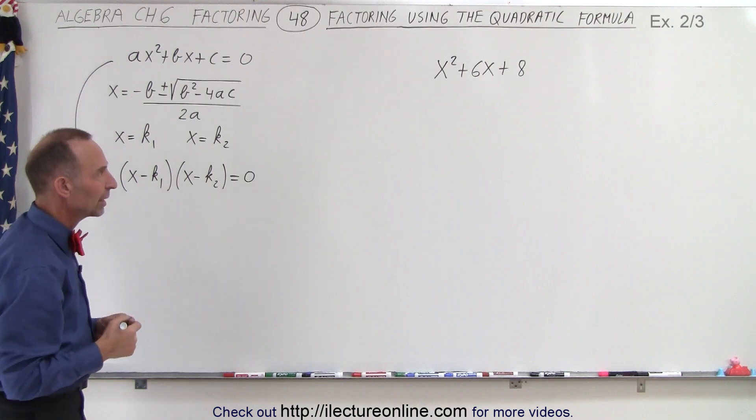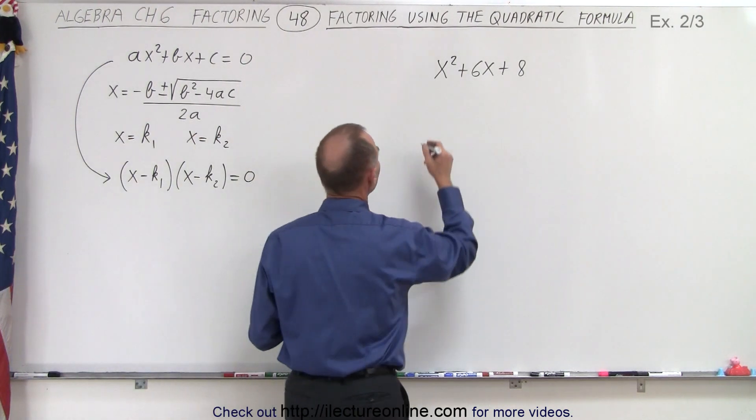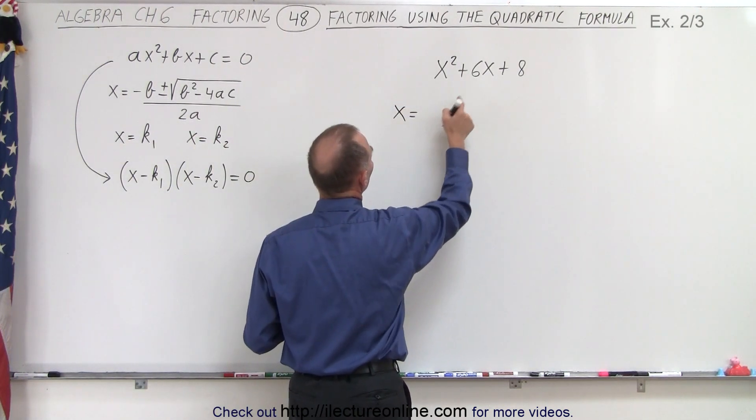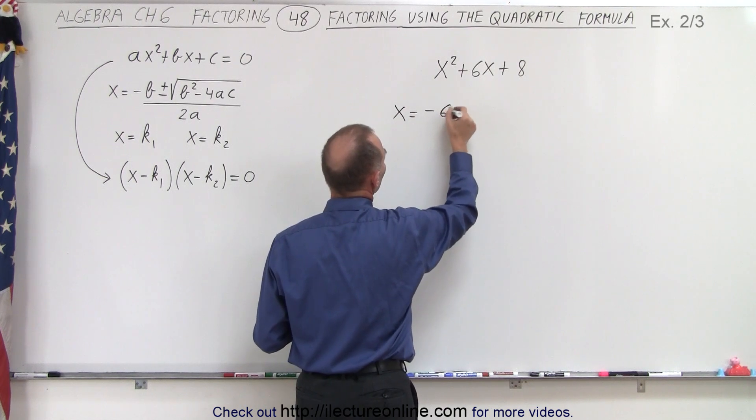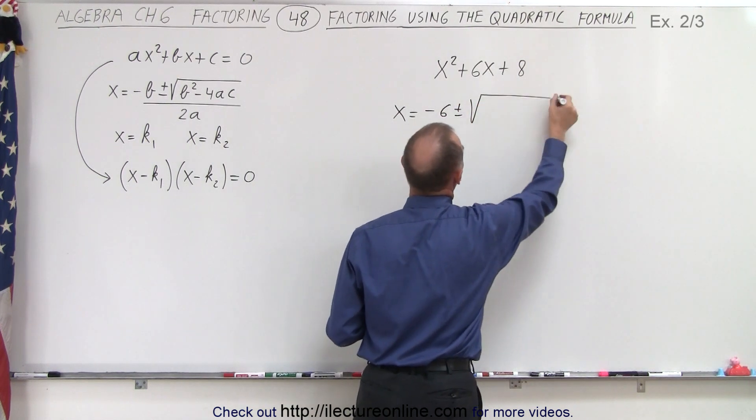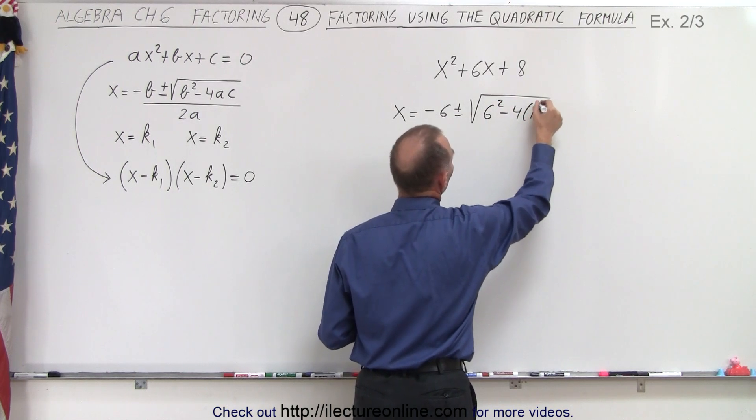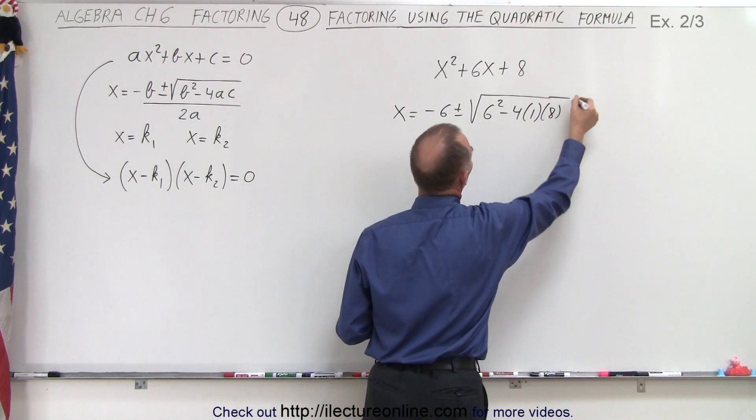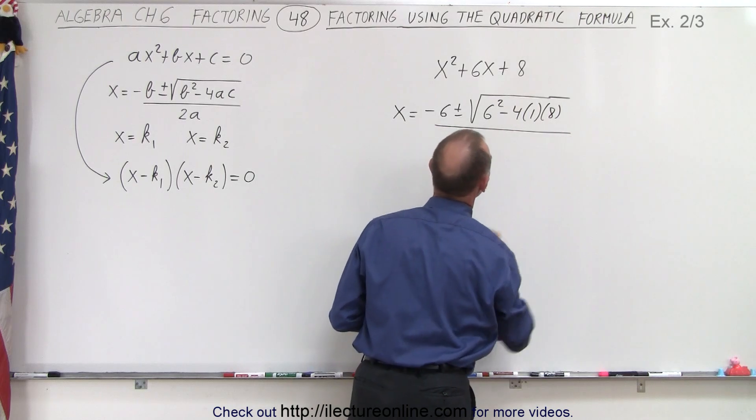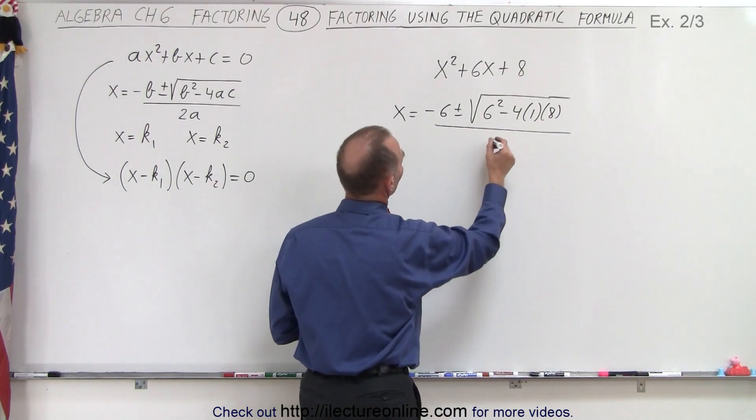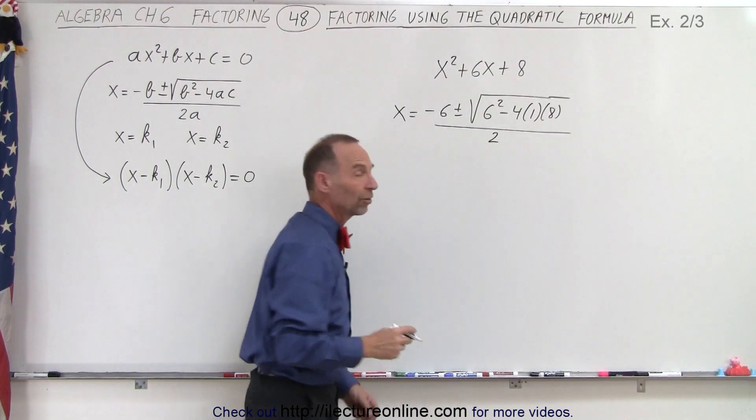So using the same technique, we can say that x is equal to minus b, which is minus 6, plus or minus the square root of b squared, which is 6 squared, minus 4 times a times c, all divided by 2a, which is 2 times 1 or 2.